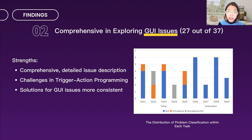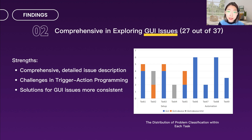Heuristic evaluation is particularly effective in identifying issues with the graphical user interface in smart homes, as evidenced in this figure. A key strength is the comprehensive, detailed issue description — focusing on GUI details is easier, such as color, text, functions, and layout, contrasting with broader descriptions when the issue involves physical devices and voice interactions.